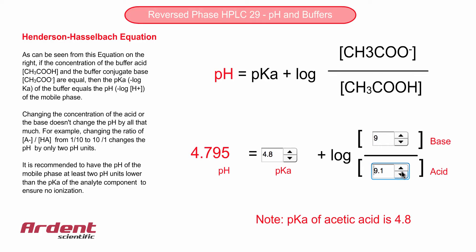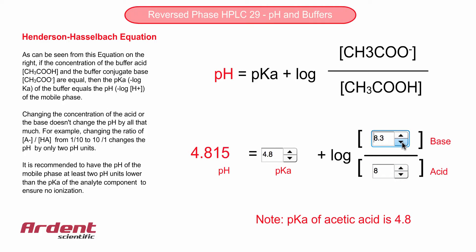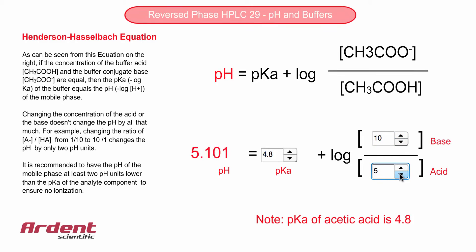The second important point to note is that if one of the concentrations changes tenfold — for example, from 10 down to 1 — this only results in a change of one pH unit. Not bad, eh? This outcome is the buffering power of the solution.